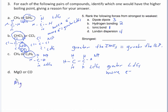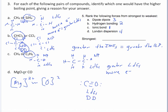Last one — MgO is a metal bonded to a nonmetal, so it's going to form an ionic bond. CO is a polar molecule, so it has London dispersion forces and dipole-dipole. But MgO also has London dispersion forces plus an ionic bond, and ionic bonding is a stronger type of force than dipole-dipole. So MgO would have the greater boiling point when compared to CO, because its intermolecular forces are stronger.